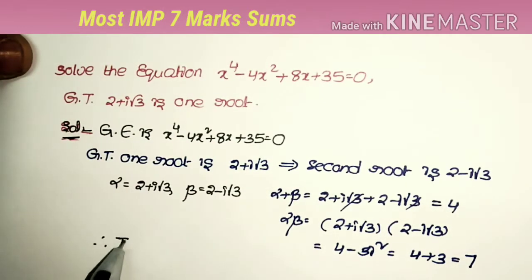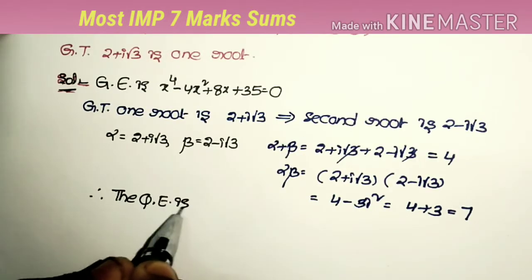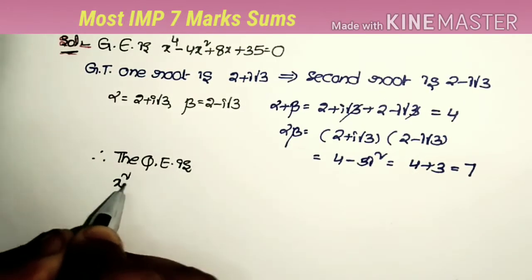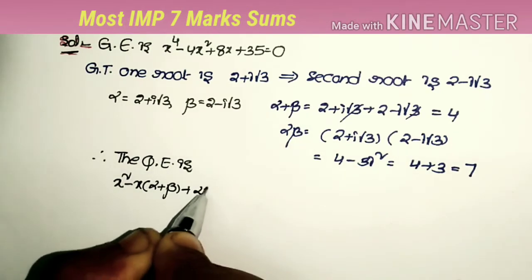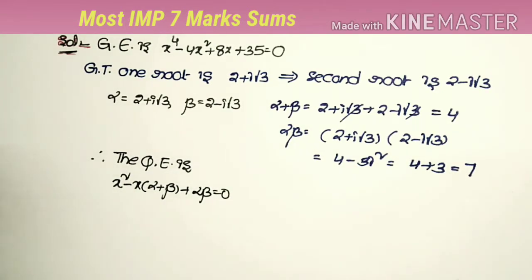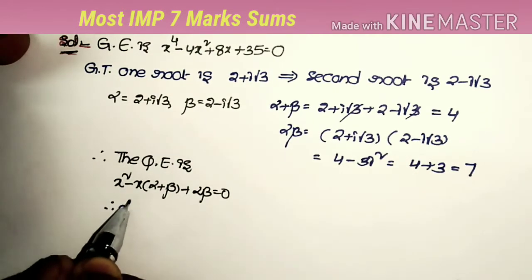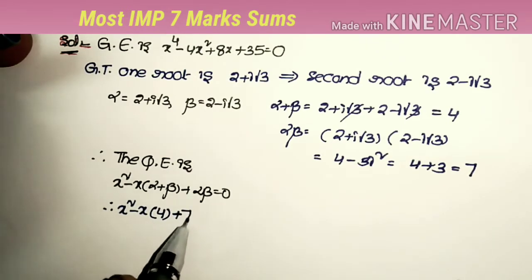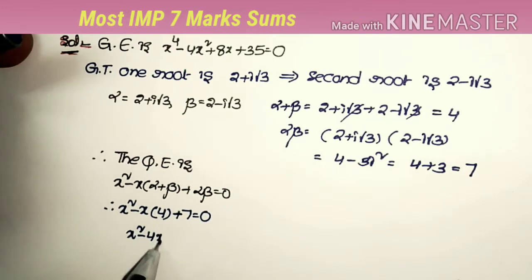Now we form the quadratic equation with these two roots using the formula x² - x(α+β) + αβ = 0. Substituting the values: x² - 4x + 7 = 0.